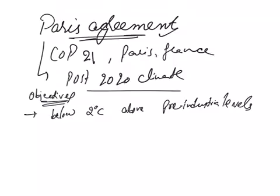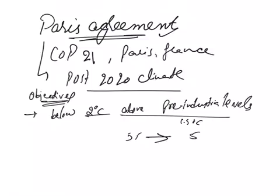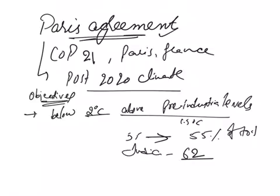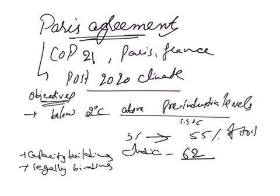The key objective of the Paris Agreement is to keep global temperatures well below 2 degrees centigrade above pre-industrial levels and try to limit them to 1.5 degrees centigrade. The treaty comes into force when 55 countries contributing to 55% of total global emissions ratify the agreement. India is the 62nd country to ratify. The agreement stresses capacity building — strengthening countries' ability to deal with climate change impacts — and is legally binding on all parties.